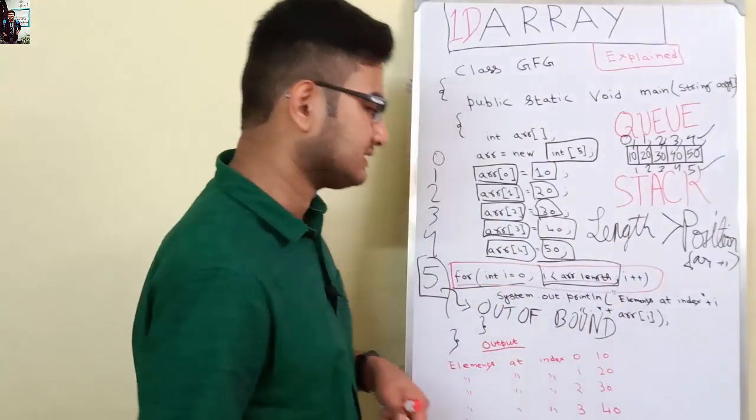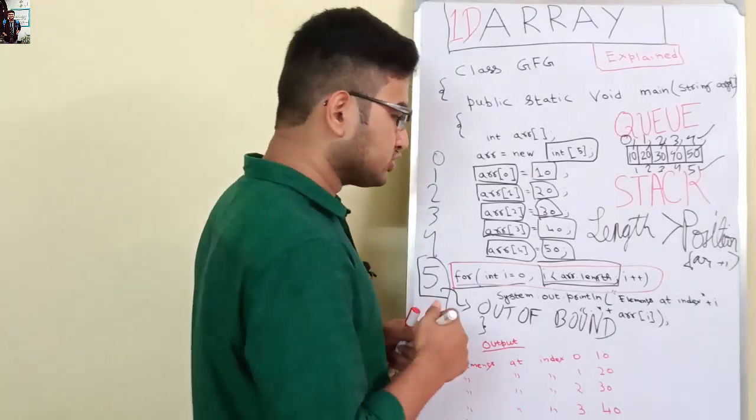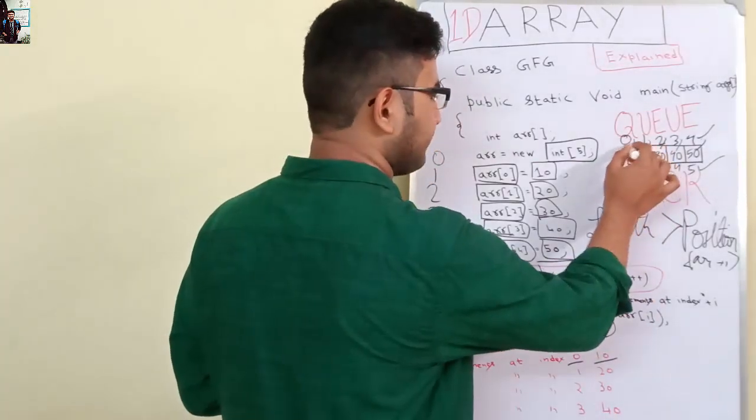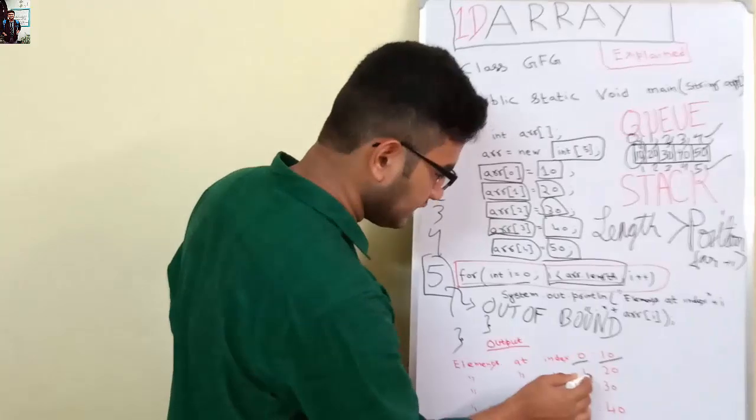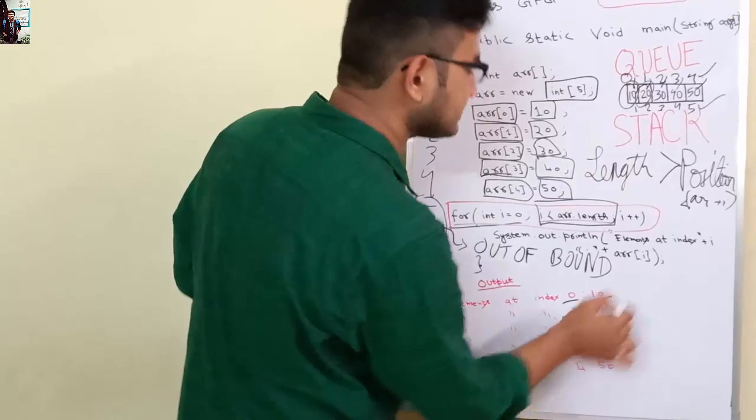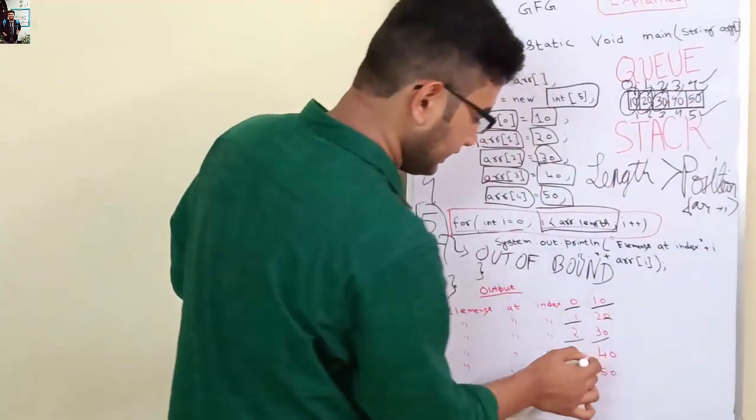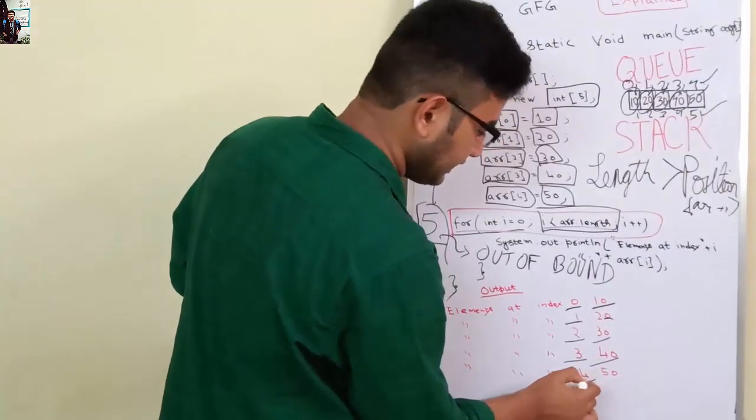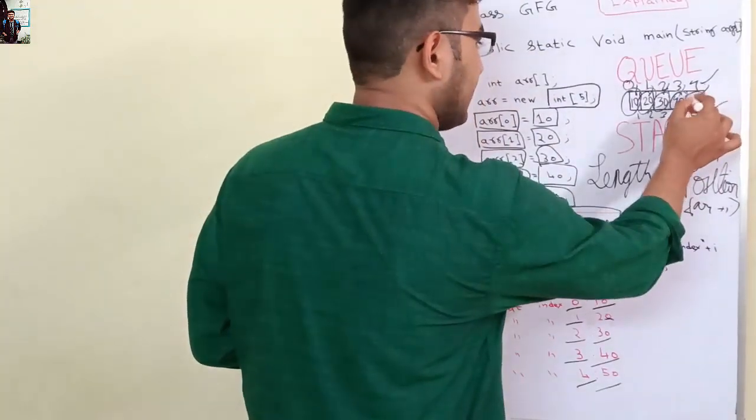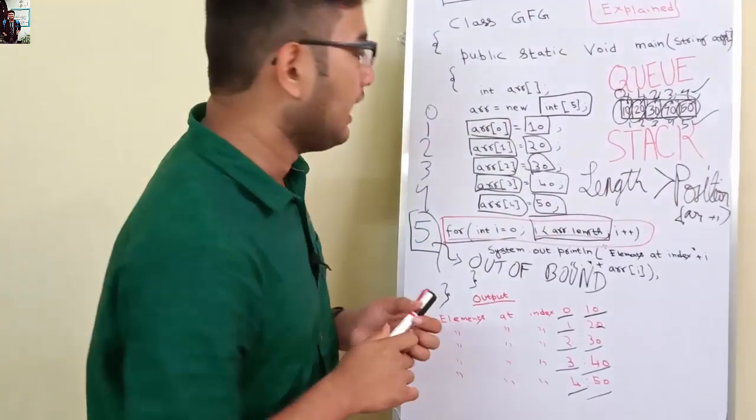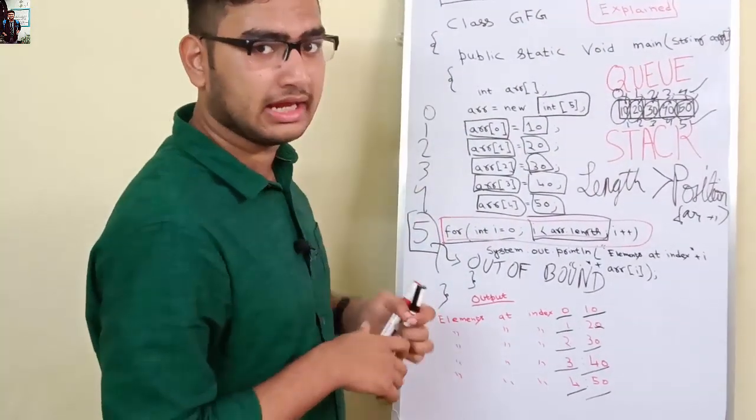As the program goes for int i equals 0, i less than arr.length, then i plus plus, and after that we print each and every element with the index and the element that is there. The element at index 0 is 10, index 1 is 20, index 2 is 30, index 3 is 40, index 4 is 50. This is just a simple program of array.